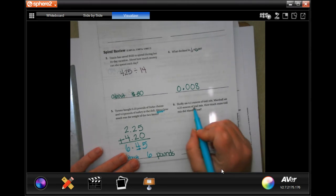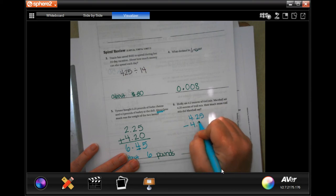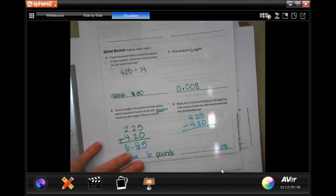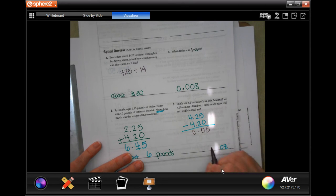Last one, guys. Shelly ate 4.2 ounces of trail mix. Marshall ate 4.25 ounces of trail mix. How much more trail mix did Marshall eat? So, we're going to take the bigger number and subtract the smaller number because it wants us to find the difference. So, drop my decimal. 5 minus 0 is 5. 2 minus 2 is 0. And 4 minus 4 is 0. So, 0.05 ounces. You can put a 0 in front. You don't have to. It doesn't matter.